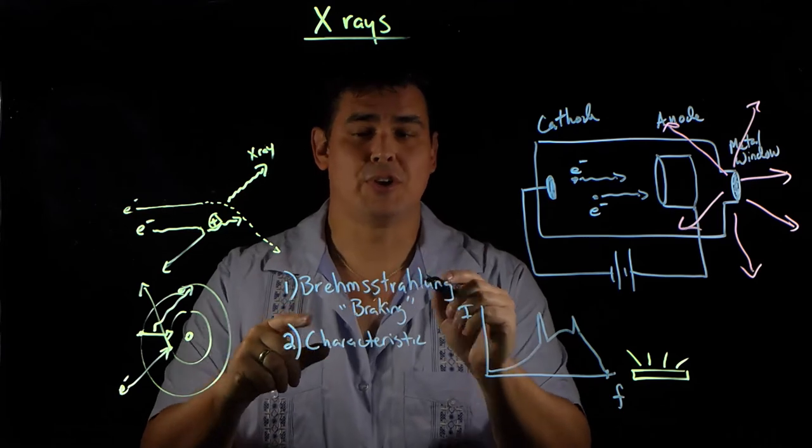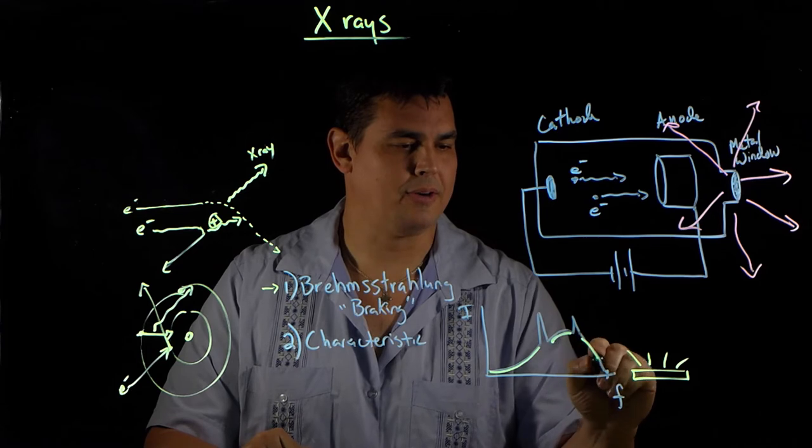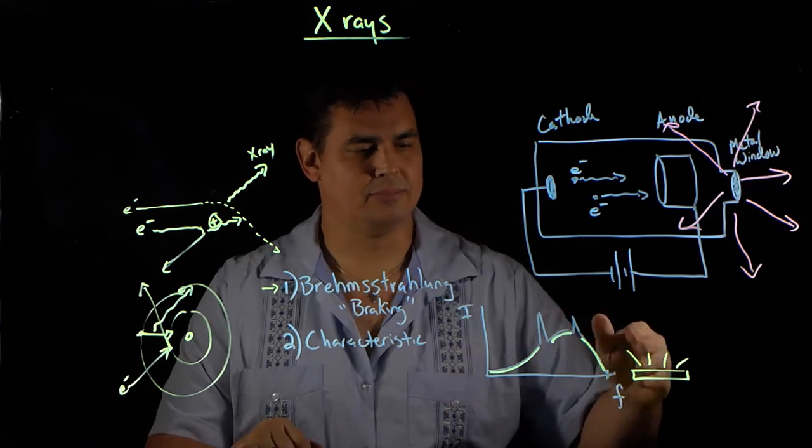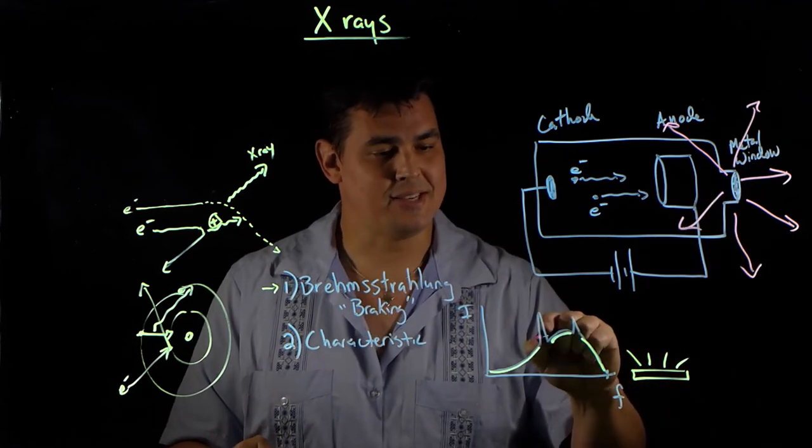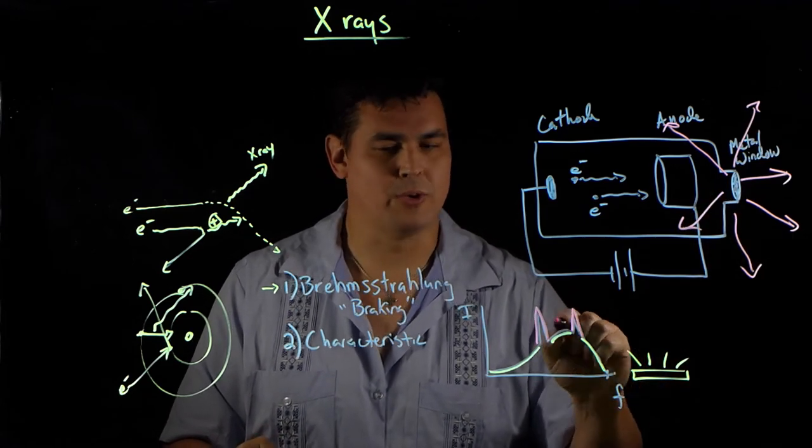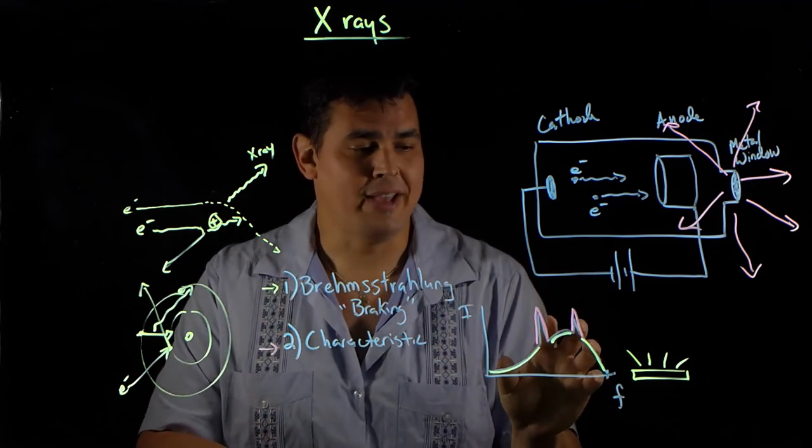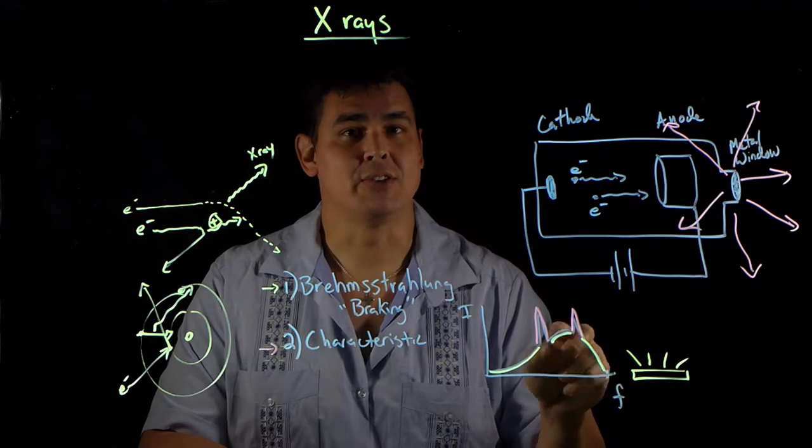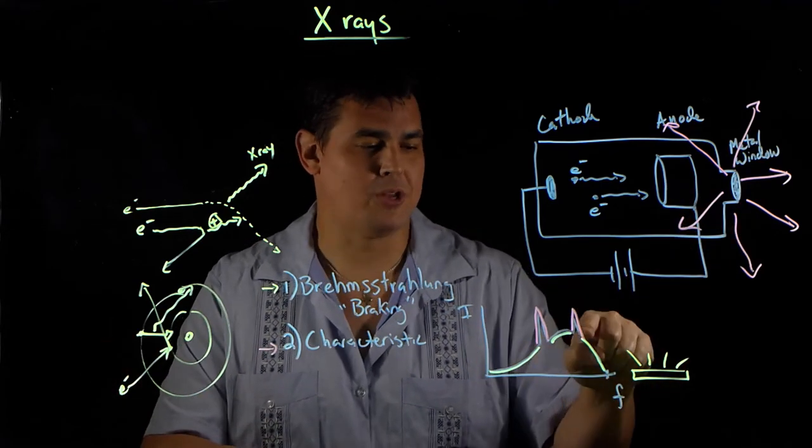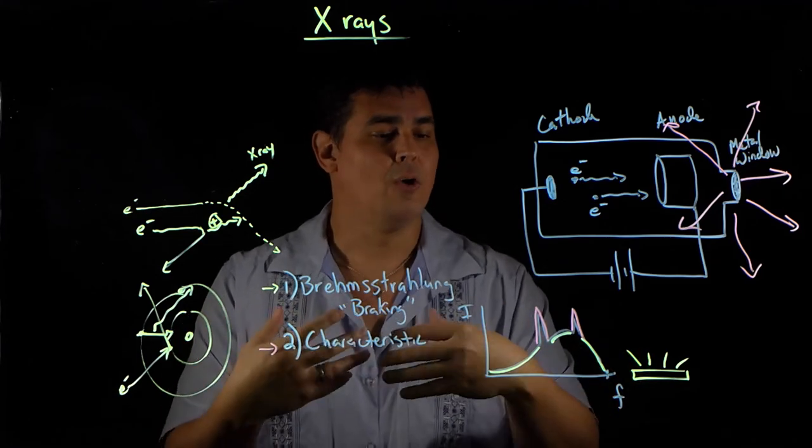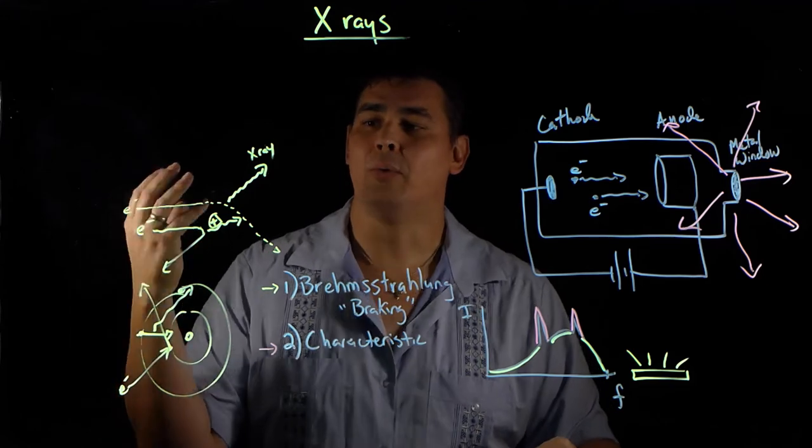So the bremsstrahlung interactions, those are this part right here, this curved part that looks kind of orderly. The characteristic interactions, the one where they actually slam into the metal, that's these peaks. So these peaks correspond with characteristic x-ray radiation. And if you look at the spectrum of different x-rays, these characteristic peaks are going to be different for every metal, kind of like an atomic spectrum. But the bremsstrahlung curve looks the same for everything because it's just a range of different ways that the electron could slow down when it encounters a nucleus.